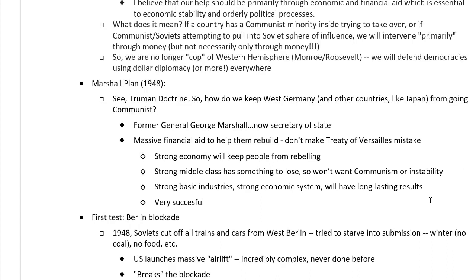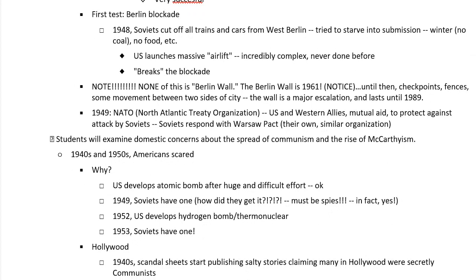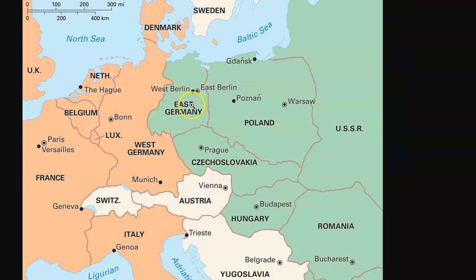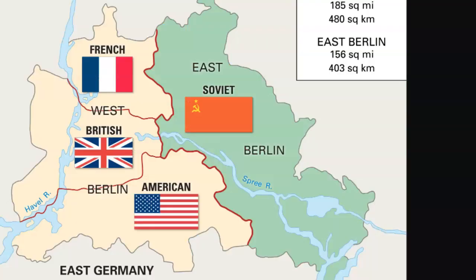The first real test of the Truman Doctrine and America's resolve is the Berlin Blockade — again, this is not the Berlin Wall, don't get them confused. In 1948, the Soviets cut off all trains, cars, and trucks from West Berlin. Remember, they're surrounding it. All of the gray is East Germany. West Berlin is a little island in the middle of East Germany. They were trying to starve them out, and it was winter. They depended on coal to heat their homes. Everything in West Berlin had to be trucked in or brought in by train. Without that, they were going to starve and freeze to death.